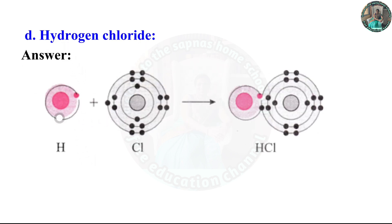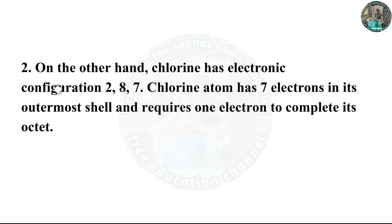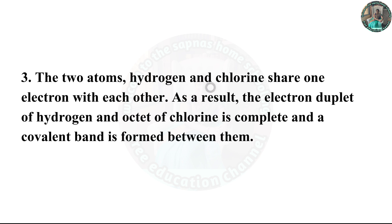Hydrogen chloride, HCl. Hydrogen has atomic number 1 and electronic configuration 1; it has 1 electron in its K shell and its duplet is short of 1 electron, so the valency of hydrogen is 1. Chlorine has electronic configuration 2, 8, 7; the chlorine atom has 7 electrons in its outermost shell and requires 1 electron to complete its octet. The two atoms, hydrogen and chlorine, share 1 electron with each other. As a result, the electron duplet of hydrogen and octet of chlorine are complete, and a covalent bond is formed between them.